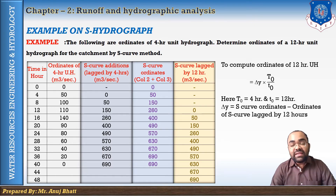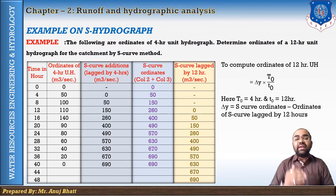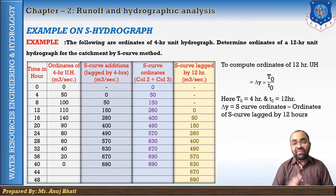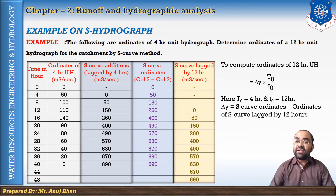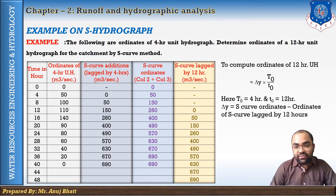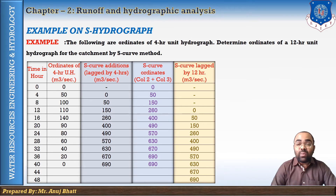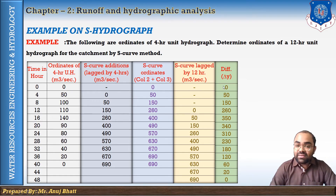To compute the ordinates for the unit hydrograph we use the formula: ordinate of the n-hour unit hydrograph = ΔY × T0 / t0, where T0 is the known duration (4 hours here) and t0 is the required duration (12 hours). ΔY equals the S-curve ordinate minus the lagged S-curve ordinate — i.e., the S-curve lagged by 12 hours. Computing ΔY: 0−0=0; 50−0=50; 150−0=150; 260−0=260.